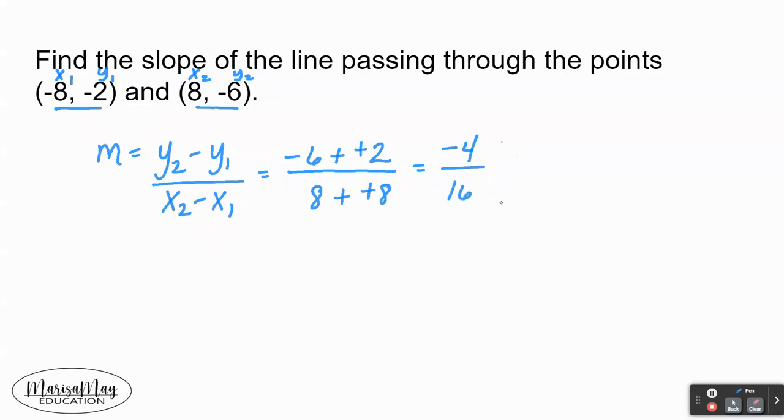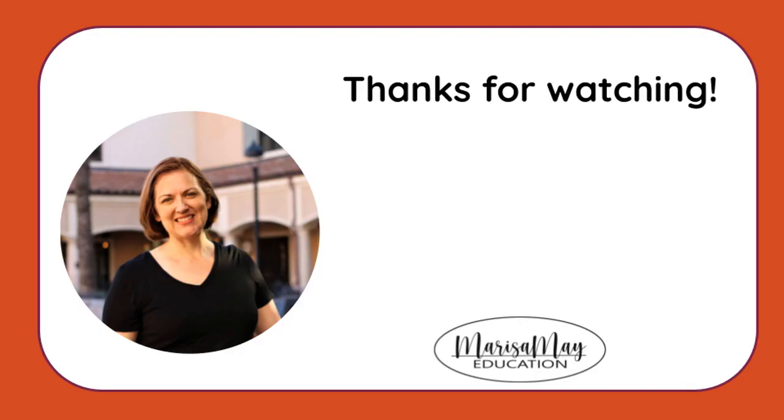Now both of these are divisible by 4, so you can divide both of them by 4 and that's going to give you negative one-fourth as your slope.